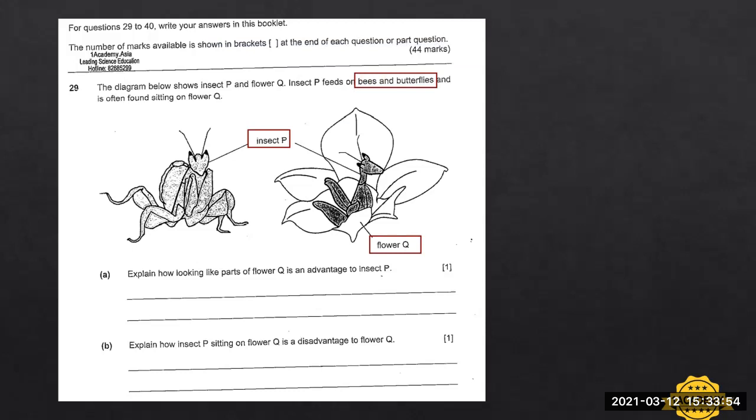Part A: the student is required to answer explain how looking like parts of flower Q is an advantage to insect P. So it actually means this insect P actually looks partly like the flower Q. So how does this insect, by looking like part of flower Q, is an advantage to insect P. For some students who are perhaps not so advanced in English, they can break down the questions into smaller parts.